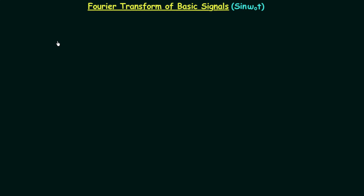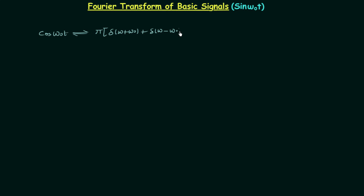In the previous lecture we calculated the Fourier transform of cos(ω₀t) and we found its Fourier transform equal to π multiplied by δ(ω + ω₀) plus δ(ω − ω₀).